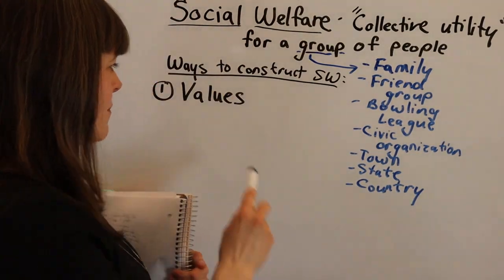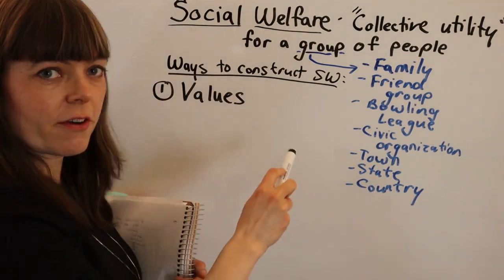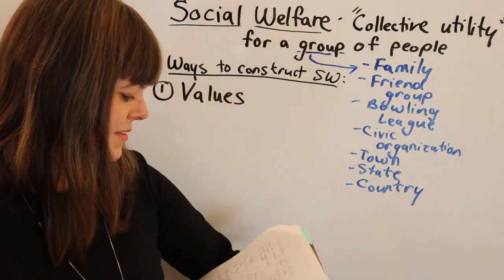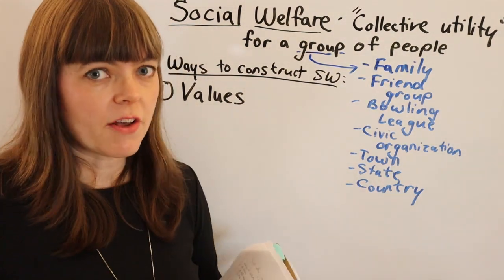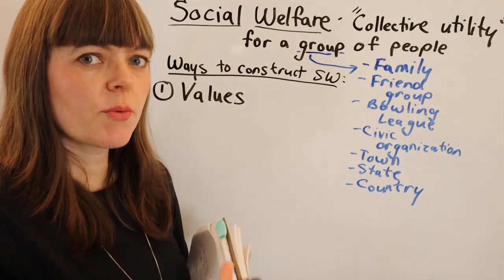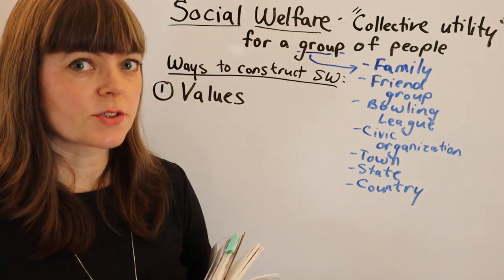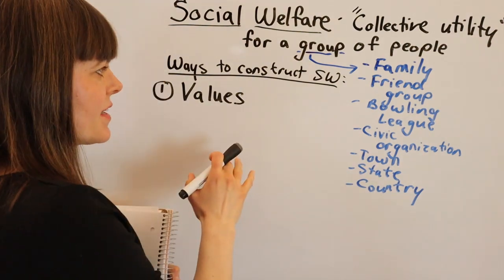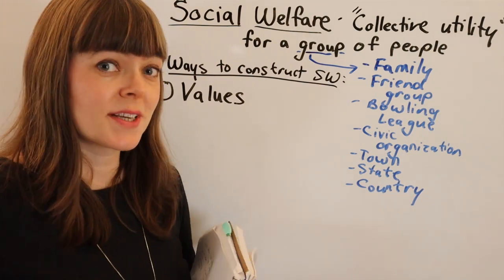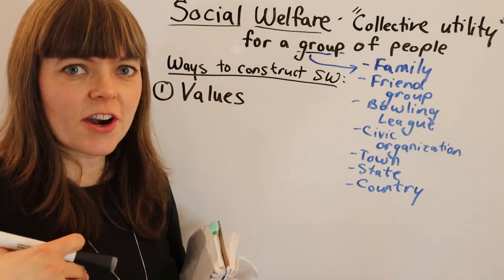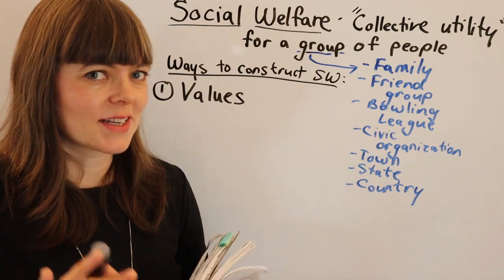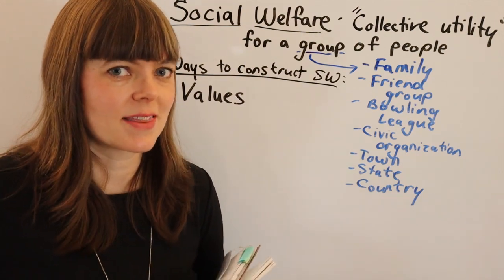The first way of maximizing a social welfare function, or constructing one that you might want to maximize, would be to just list the values that you're trying to optimize and give every one of them an importance weight. If you're optimizing a social welfare function, that means you're choosing something that the leader of this group has to choose, and it's going to look something like this.